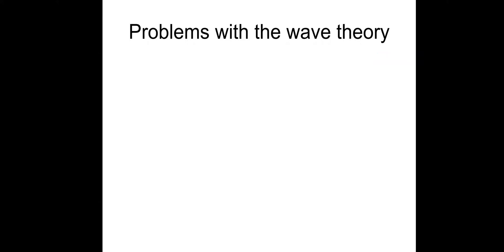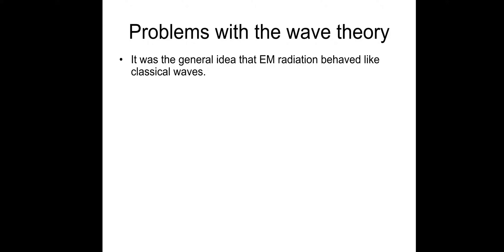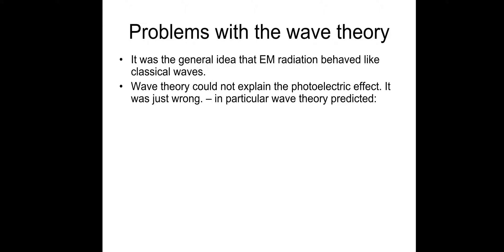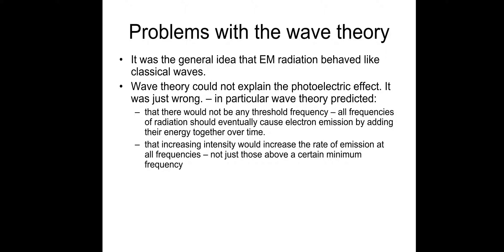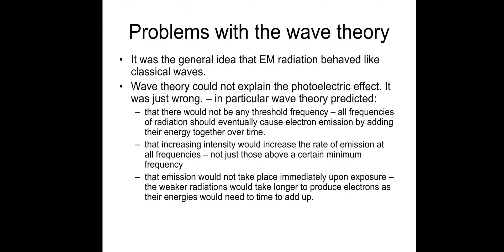Problems with the wave theory: the general idea was that electromagnetic radiation behaves like classical waves, but wave theory could not explain the photoelectric effect. In particular, wave theory predicted that there would not be any threshold frequency — all frequencies of radiation would eventually cause electron emission by adding their energy together over time. It also predicted that increasing the intensity would increase the rate of emission at all frequencies and not just those above a certain minimum frequency. It also predicted that emission would not take place immediately upon exposure and that weaker radiations would take longer to produce electrons as their energies would need time to sum up. None of this occurred.